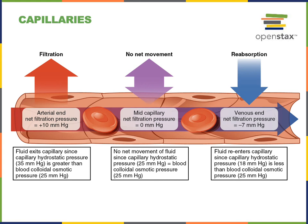We can calculate the net filtration pressure at different points along the capillary by taking the difference between capillary hydrostatic pressure and blood colloidal osmotic pressure. With a capillary hydrostatic pressure of 35 and a blood colloidal osmotic pressure of 25, we get a net filtration pressure of 10, driving filtration at the arterial end. At some point in the mid region, the capillary hydrostatic pressure declines to equal the colloidal osmotic pressure, so the net filtration pressure is zero and there is no net movement of fluid — no filtration or reabsorption.